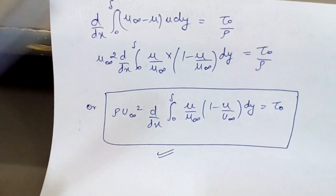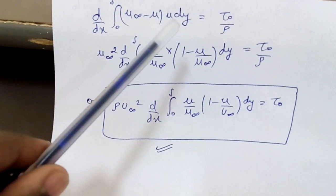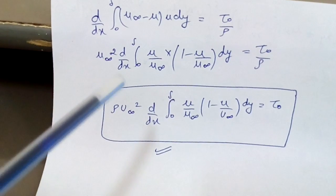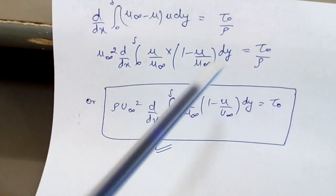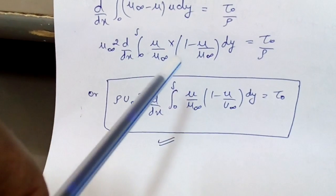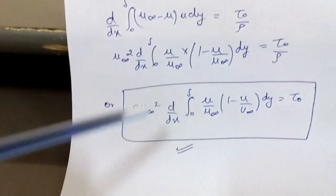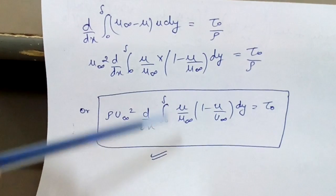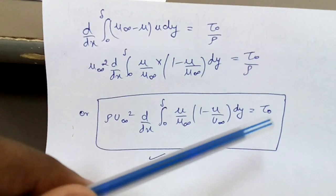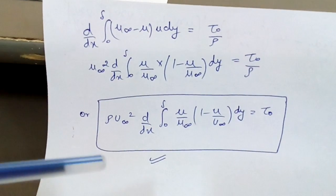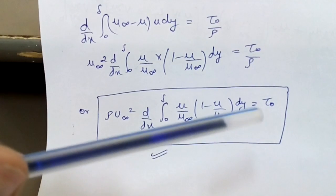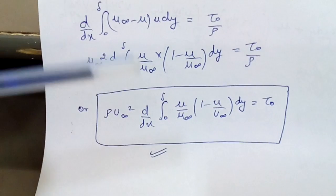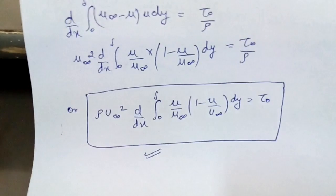Taking out u∞ common from the first bracket gives (1 minus u/u∞), and multiplying and dividing u by u∞ gives u/u∞. So the equation becomes: rho u∞² d by dx of integral from 0 to delta of (u/u∞)(1 minus u/u∞) dy equals tau nought. This integration gives the von Karman momentum integral equation, which gives the wall shear stress tau nought. I have shown you the derivation step by step.